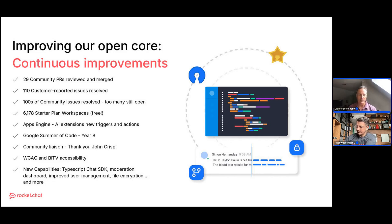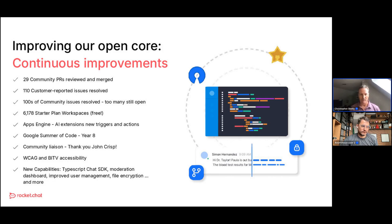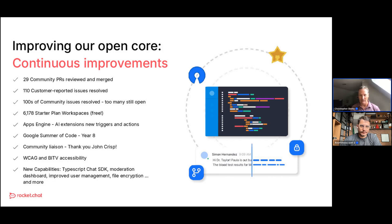Apps Engine continues to expand — we've added AI extensions, new triggers and actions, and are continuing to invest in it. Apps Engine is our toolkit enabling organizations to expand and adapt Rocket.Chat's capabilities. Google Summer of Code year eight was another success: we had a record number of proposals submitted, and members of our team are currently on their way to the GSoC summit in California.